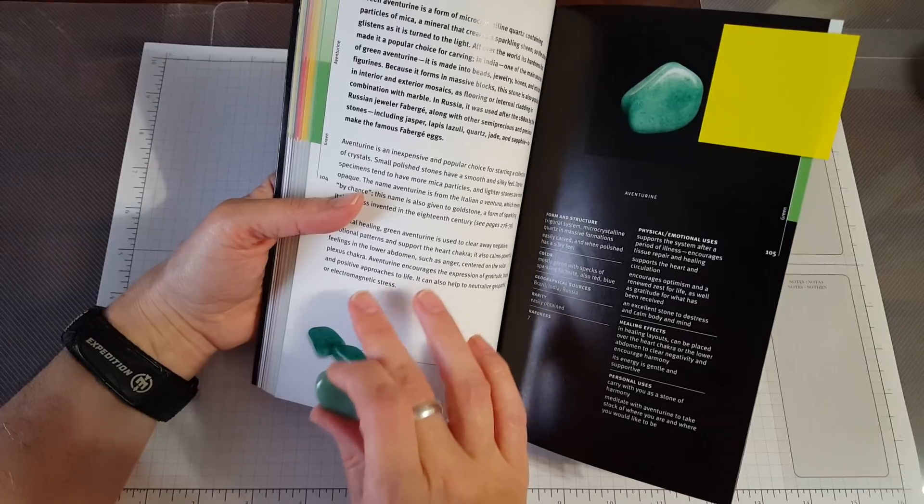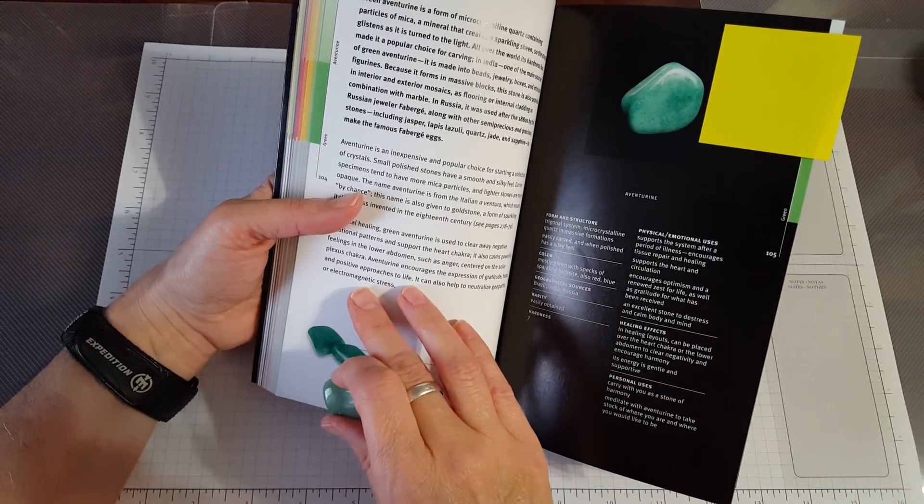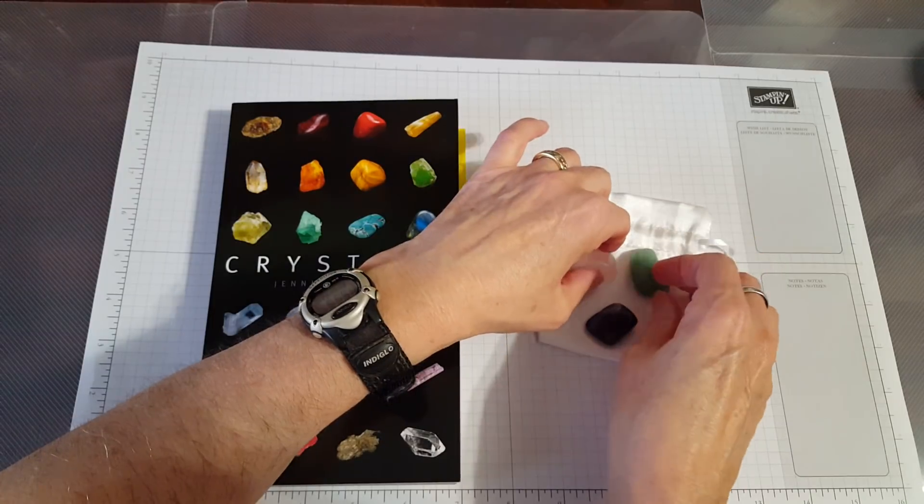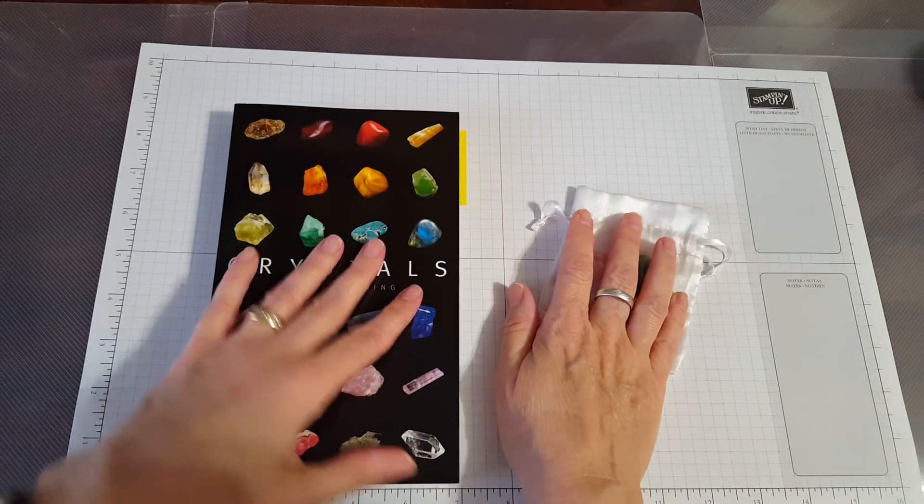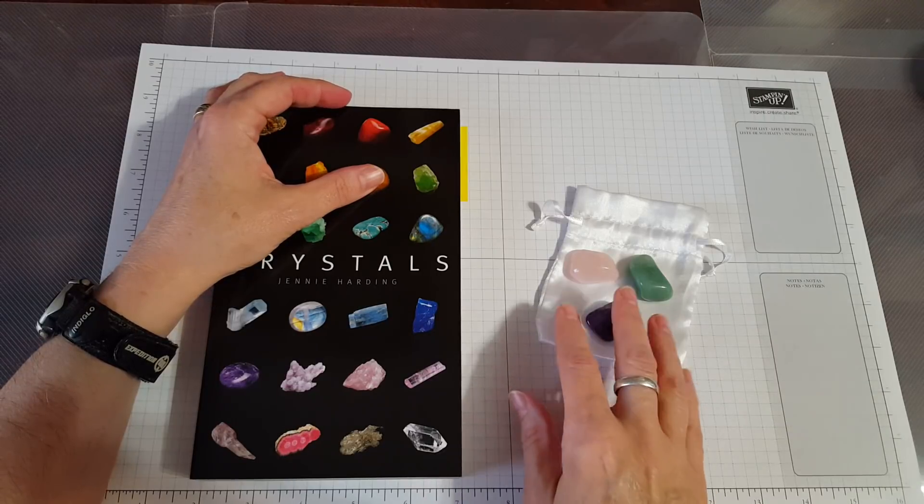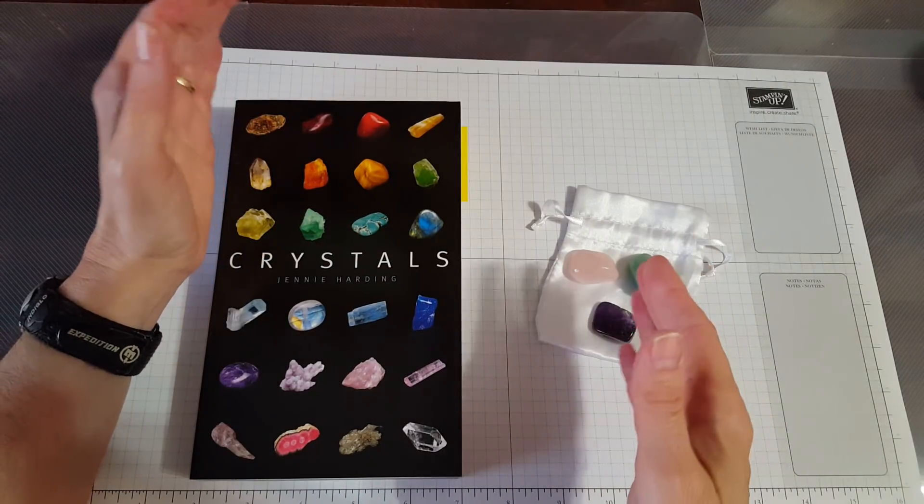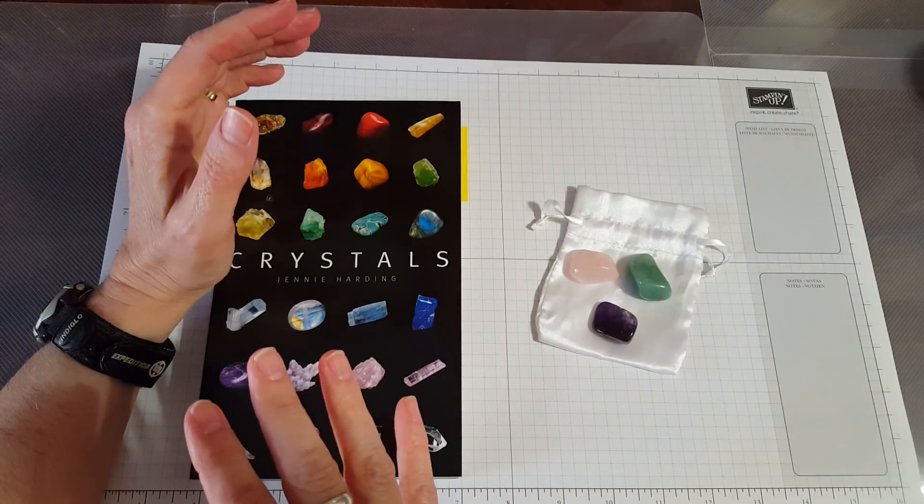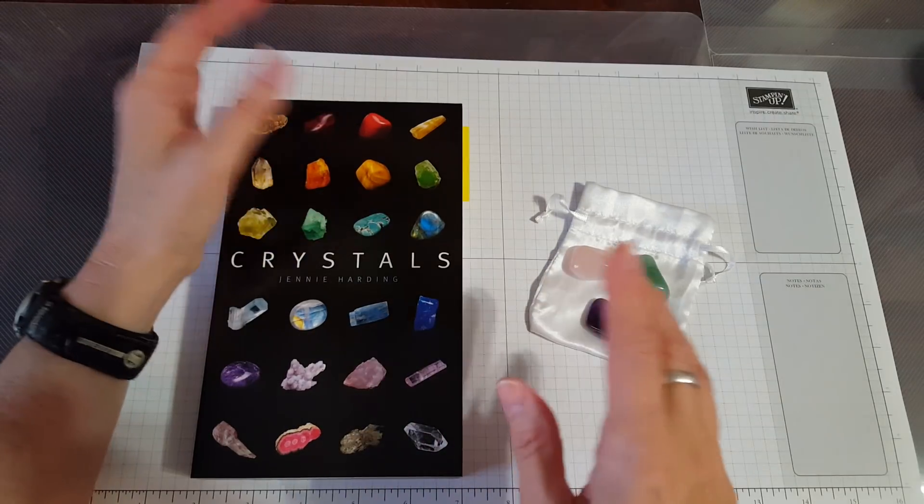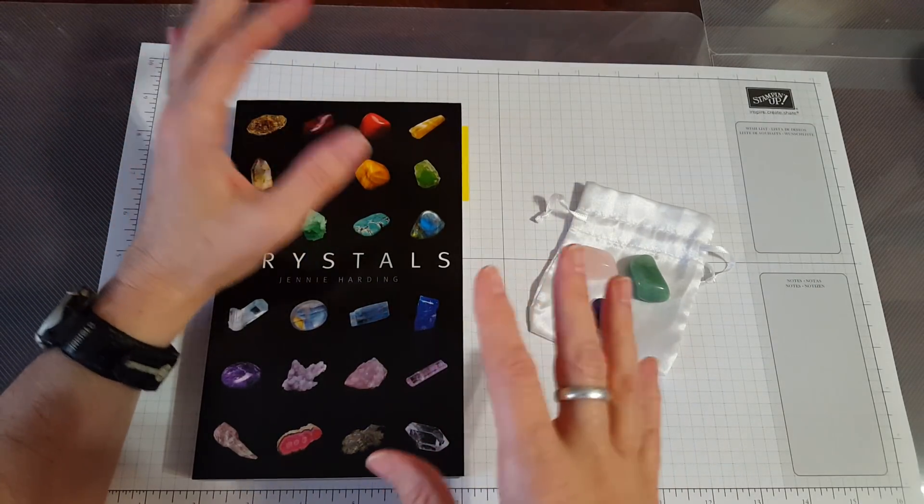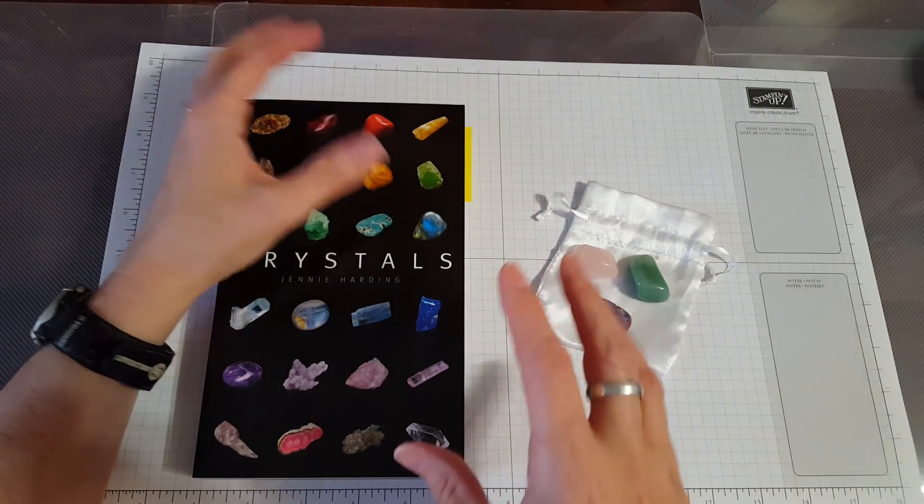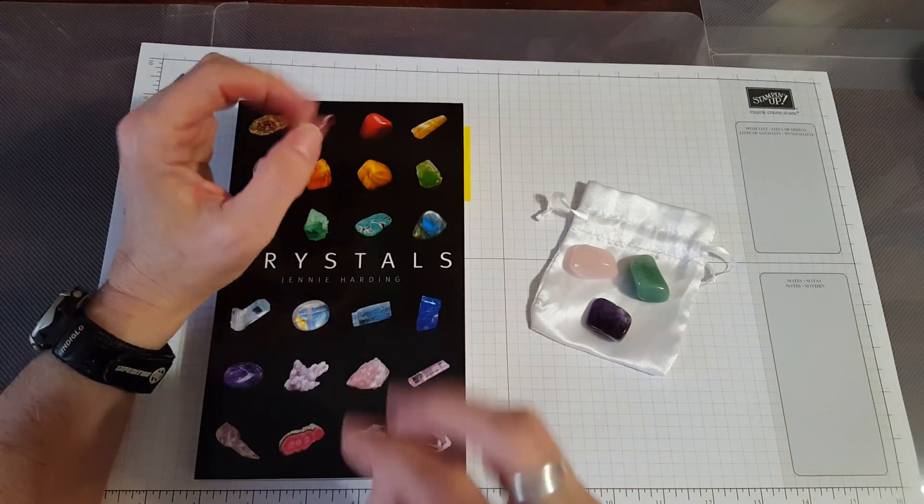Aventurine encourages the expression of gratitude, hope, and positive approaches to life. It can also help neutralize geopathic or electromagnetic stress, which is interesting too because I've been doing a lot of going outside and putting my bare feet on the grass, that kind of thing, you know, trying to get centered and make good decisions and stuff like that. So anyway, that's what I came up with to carry for this week and it's one of the ways that I like to just kind of support my intentions because my intention is to make the right decisions, to do the best I can for my family, for my cat too. Sometimes we can get a little carried away when we start flashing back on what happened in other instances - we have to stay grounded and present, stuff like that.